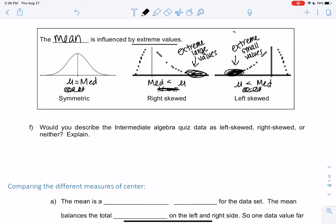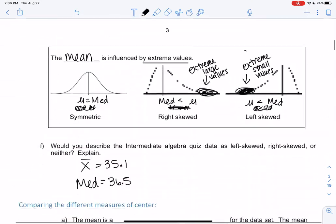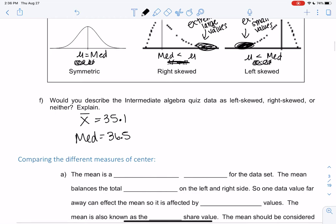So back to that intermediate example, we found that X̄ was 35.1—this was in the previous example—and that the median was 36.5. You can go back and check. So based on these numbers, is it left-skewed, right-skewed, or neither? Neither might be symmetric.